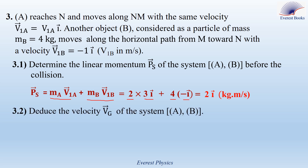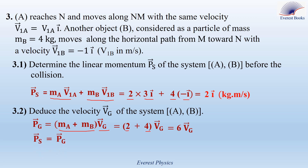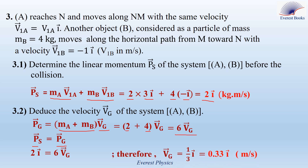Part 3.2: Determine the velocity V_G of the system AB. The linear momentum of the center of mass of the system equals the total mass of the system times the velocity of the center of mass. With M_A = 2 kg and M_B = 4 kg, P_G equals 6 × V_G. Since the linear momentum of the system equals that of the center of mass, replacing P_S by 2i and P_G by 6 × V_G gives V_G equal to one-third i, which equals 0.33i meters per second.